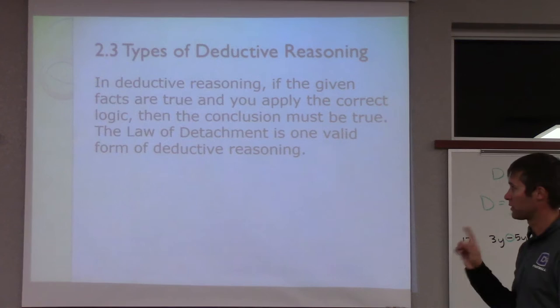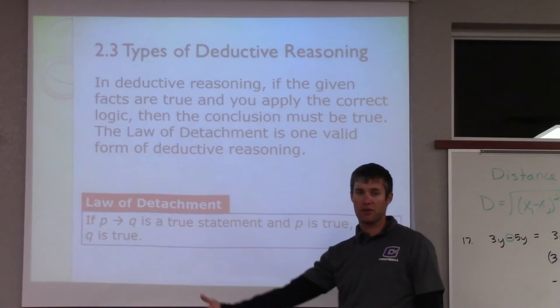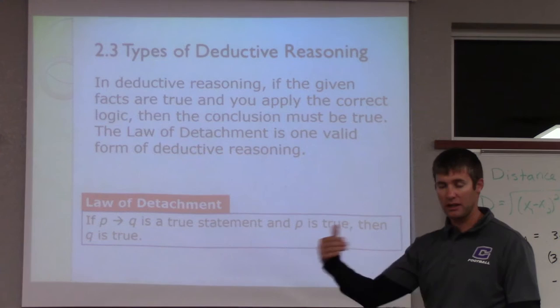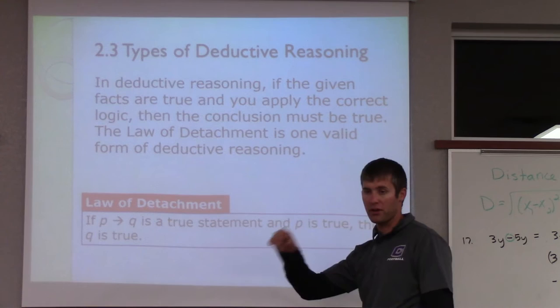So we're going to use detachment as one. A law of detachment is an if-then statement. For example: if x squared equals 4, then x equals 2. That would be an if-then statement. So then we're going to see if both the hypothesis and conclusion are true.